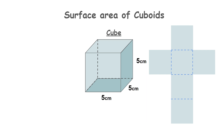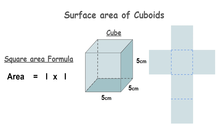To calculate the area of a square, we use the formula L multiplied by L, which stands for length multiplied by length. So that is the length of the bottom of the square, 5 centimeters, multiplied by the length of the side or height of the square, also 5 centimeters.